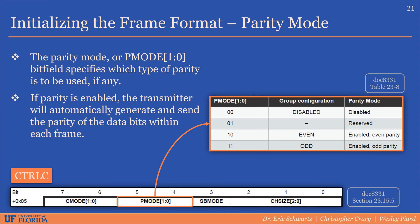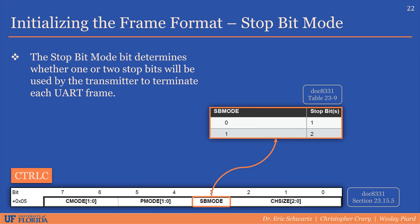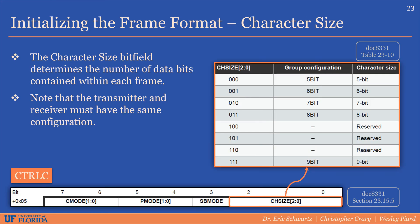The stop bit mode bit determines whether one or two stop bits will be used by the transmitter to terminate each UART frame. The character size bitfield determines the number of data bits contained within each frame. As seen in the table, we can choose 5-bit, 6-bit, 7-bit, 8-bit, and 9-bit. Note that the transmitter and receiver must have the same configuration.